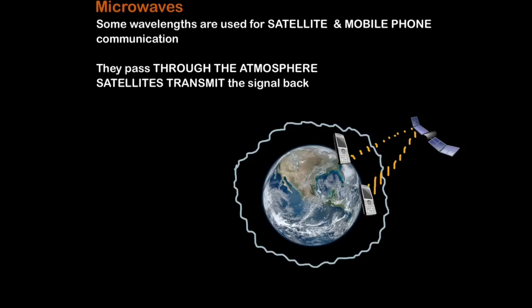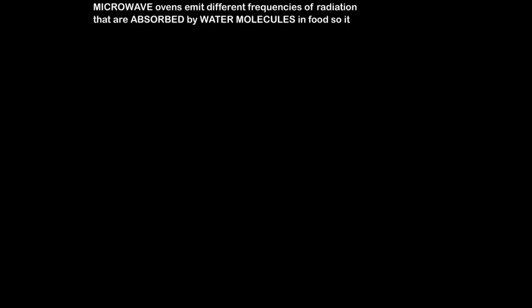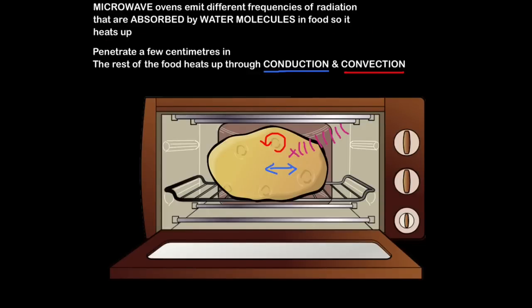So here you can see the watery layer of the atmosphere and microwaves can actually penetrate this and reach satellites which transfer the wave back to Earth. So if this person is ringing on their mobile phone, let's say someone who's quite close by, even if they're right next to you what can happen is the signal actually leaves our atmosphere and then gets transmitted from space back to the person with the other mobile phone. It's quite bonkers when you think about it. But microwaves can also be used for cooking and microwave ovens emit different frequencies of radiation that are absorbed by water molecules in food and that causes the food to heat up.